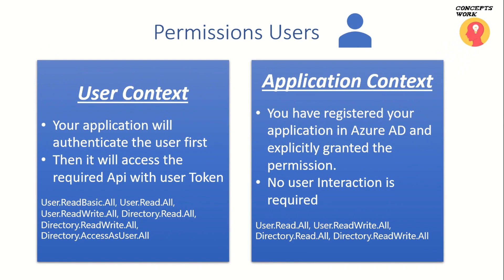The first model your application can use is user context, wherein the user gets authenticated first and then the access token is used to access information protected by Microsoft Graph API. When your application is running as a daemon or microservice — that means application context — you can use any of these permissions, but you must make sure they have been explicitly granted on portal.azure.com since there is no user interaction and the consent process will not work.